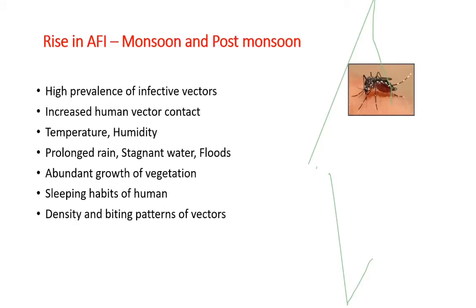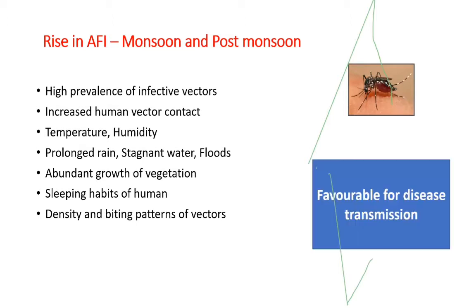Why is there a rise in acute febrile illness (AFI) in monsoon and post-monsoon season? Because of high prevalence of infective vectors, increased human-vector contact, temperature, humidity, prolonged rain, stagnant water, floods, abundant growth of vegetation, sleeping habits of humans, and density and biting pattern of vectors. All these conditions provide favorable conditions for disease transmission.